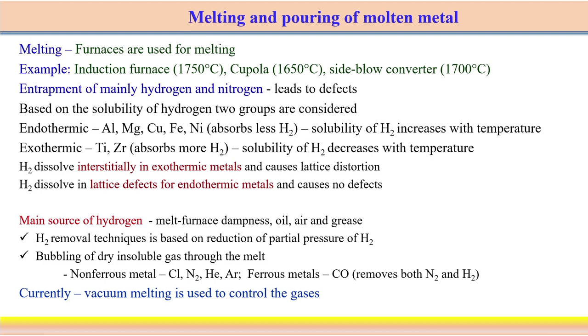The problem is that when you try to melt the material, there might be some kind of entrapment of hydrogen and nitrogen during the melting. Because once the temperature increases during melting, the tendency to react with the atmosphere — hydrogen and nitrogen — is much more. Once it tries to react with nitrogen and hydrogen, it creates some kind of defects in the cast component. Therefore, we have to be careful and look at the issues associated with the absorption of hydrogen and nitrogen at high temperature. Probably at room temperature, this is not a problem, but at high temperature the solubility of hydrogen along with the molten metal becomes much more of a problem.